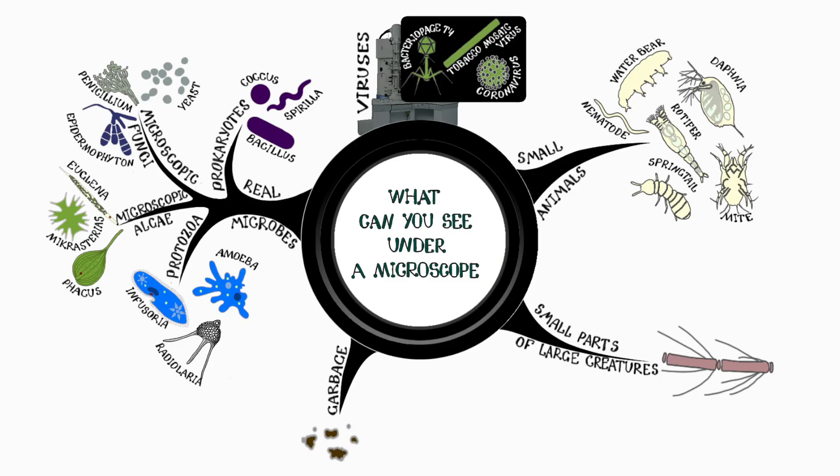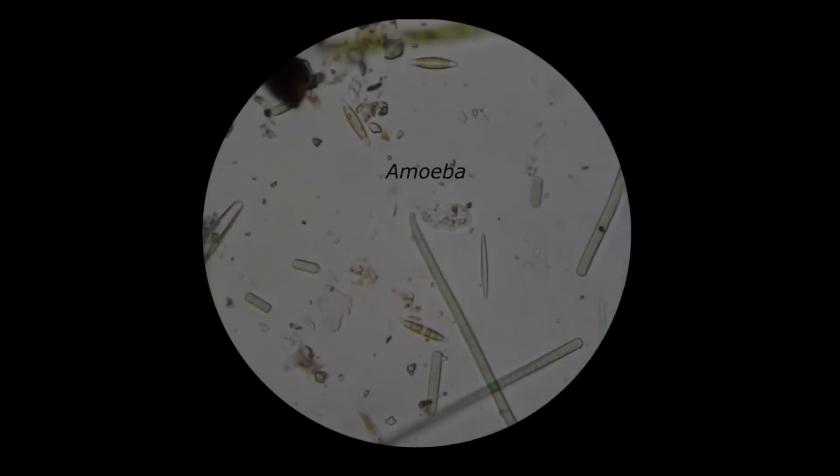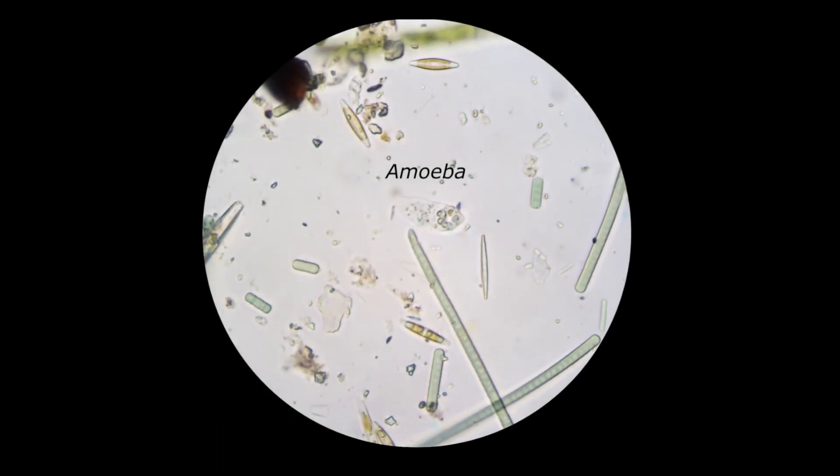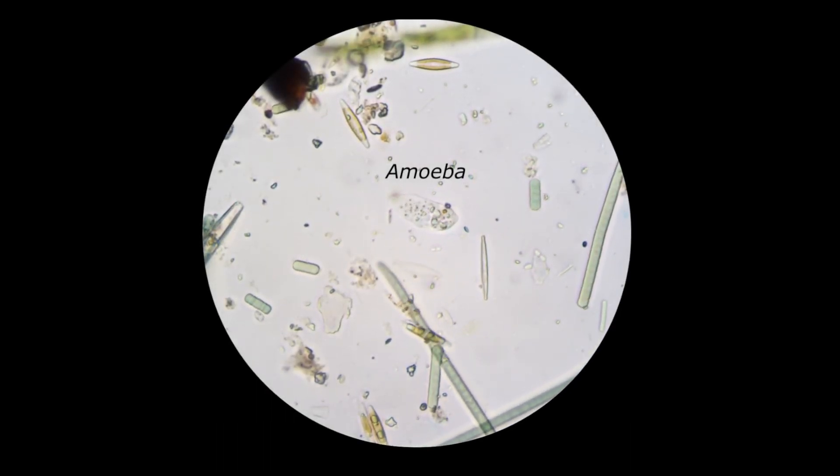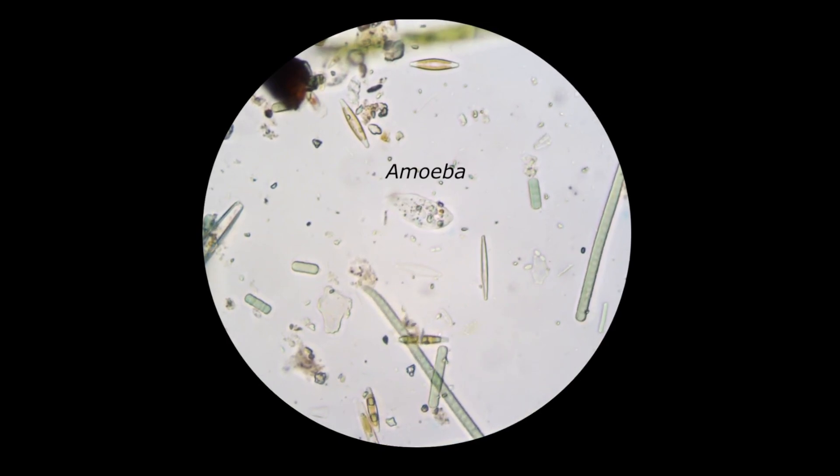The easiest way to distinguish debris from living organisms is by its shapelessness. However, sometimes you can find quite neat debris, just as there are quite shapeless microorganisms. Well, now we are better prepared to dive into the microworld. Take a look at who lives there and try to determine which groups they belong to.